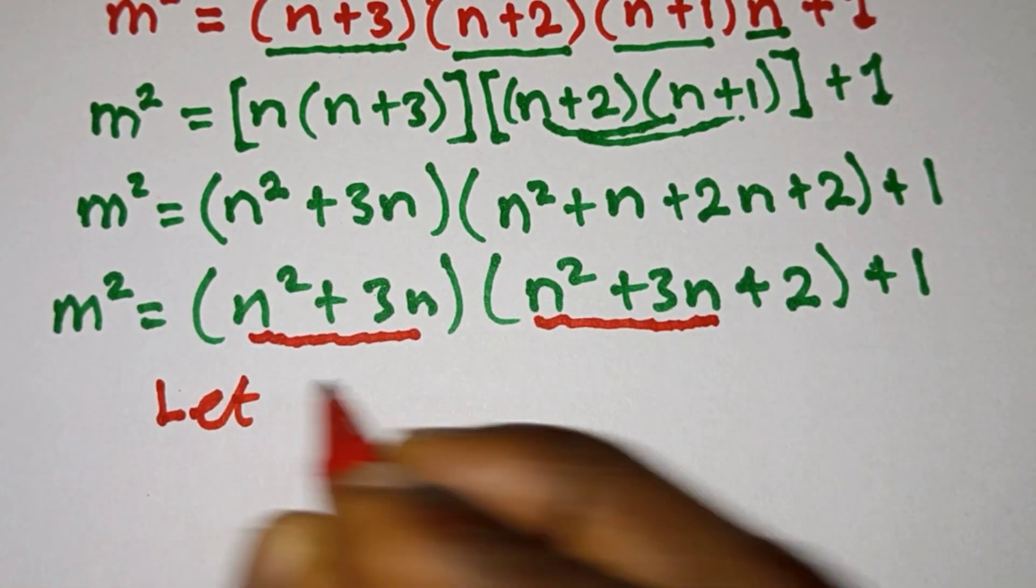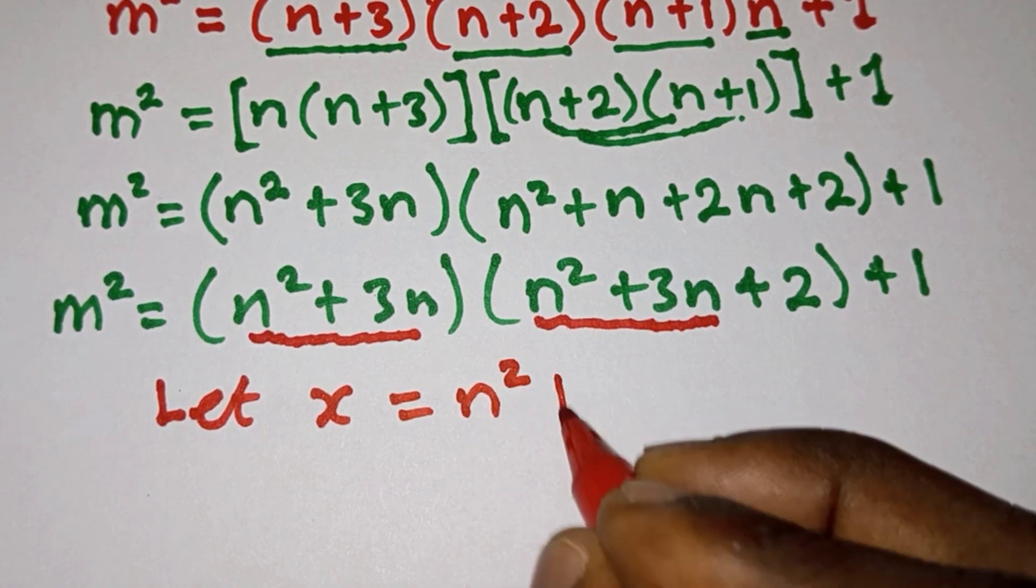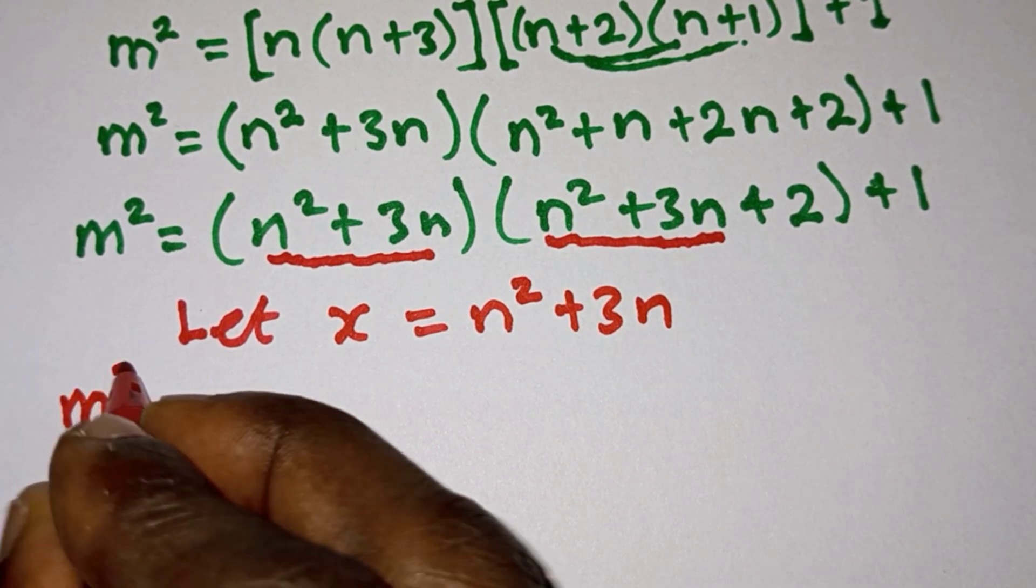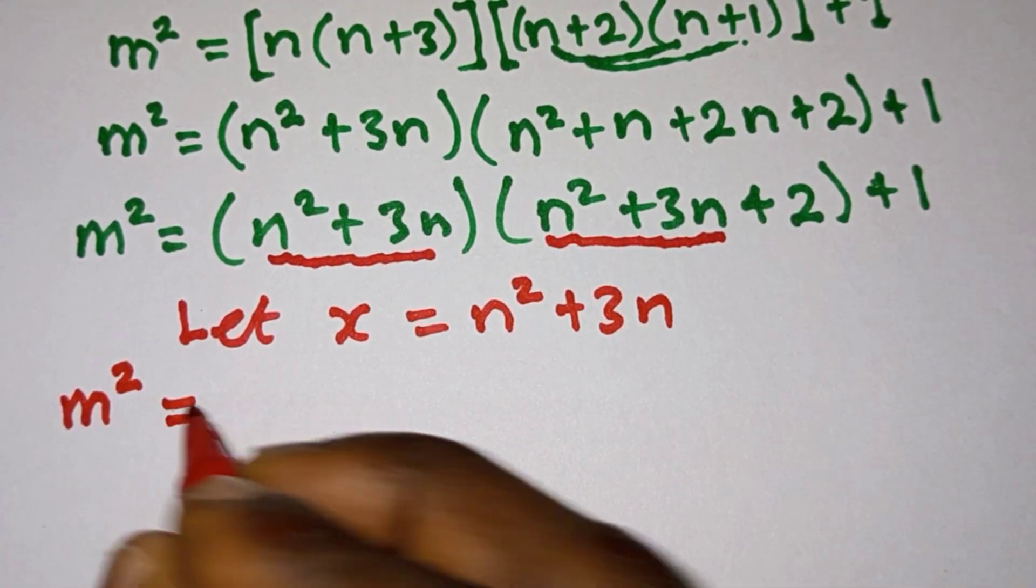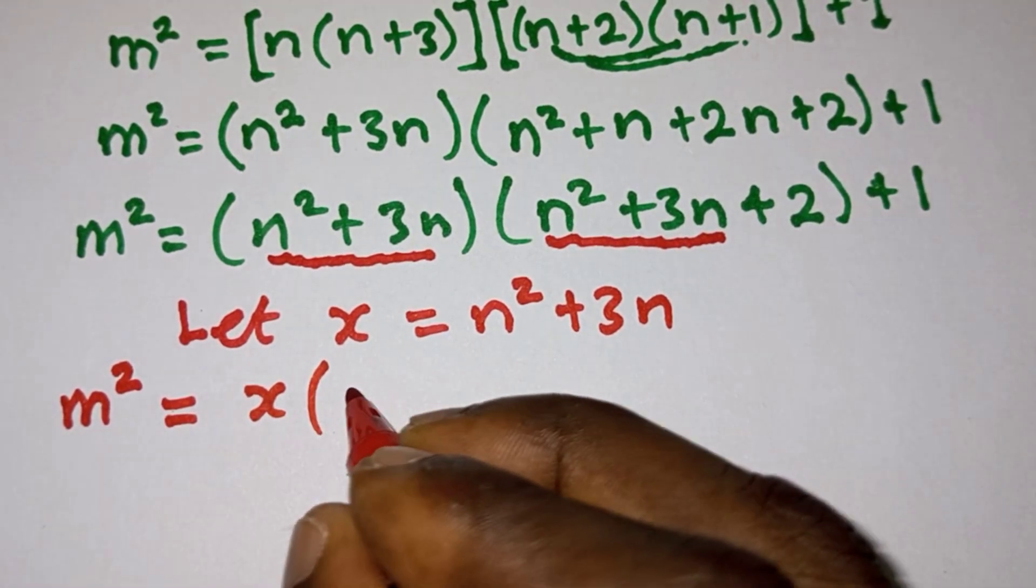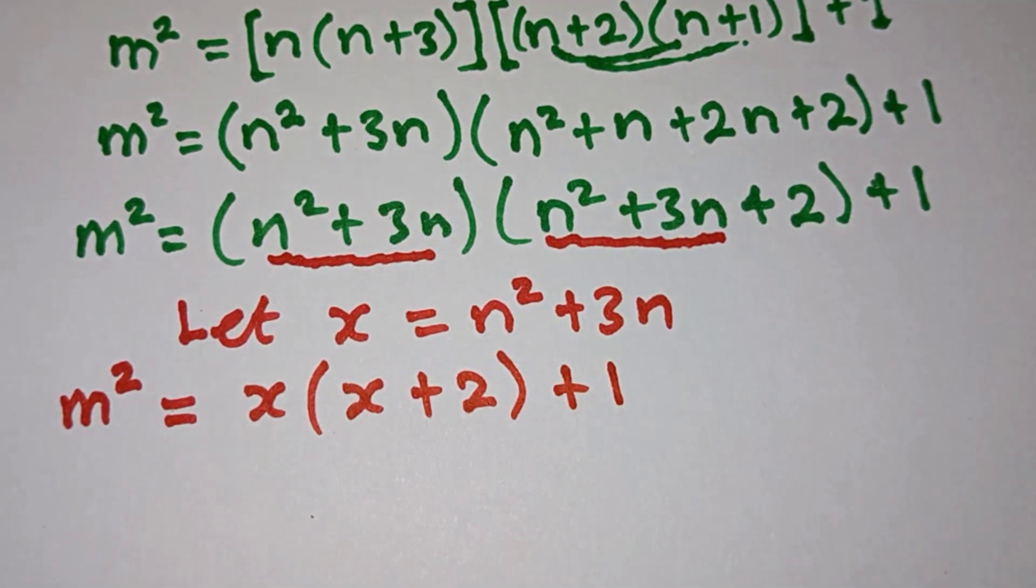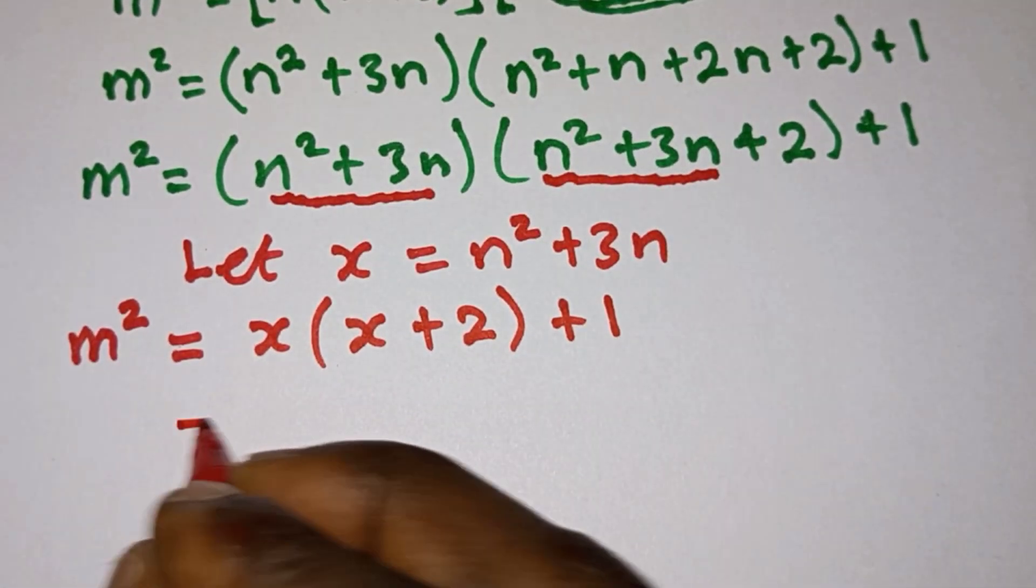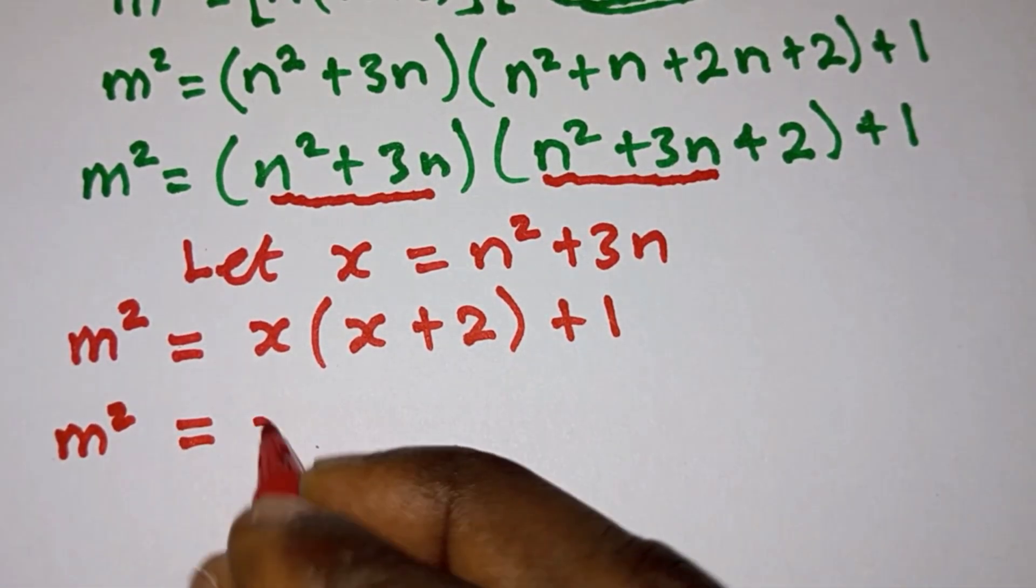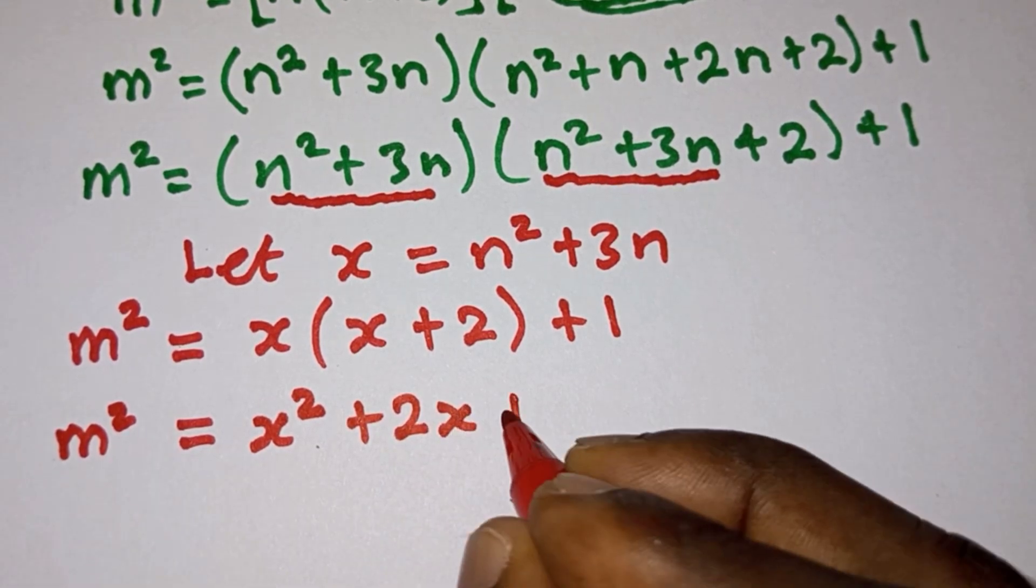So let's go ahead and let x = n² + 3n, so the equation now becomes m² = x(x+2) + 1.